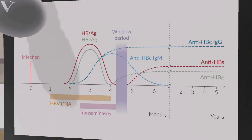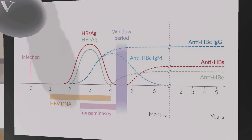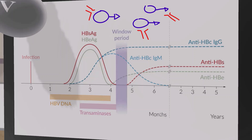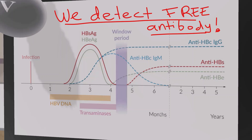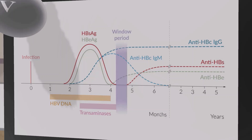Looking at the serology graph, the first things we can detect after infection are the s antigen and the e antigen — the c antigen cannot be detected in the blood. These rise until the immune system responds with antibodies, causing s and e antigen levels to go down. In the window period, antigens and antibodies correlate in roughly equal amounts, so neither free antigen nor free antibody can be detected. After the window period, more antibodies are produced — s antibodies, e antibodies, and both the IgG and IgM forms of the c antibody — with the IgG version lingering the longest.